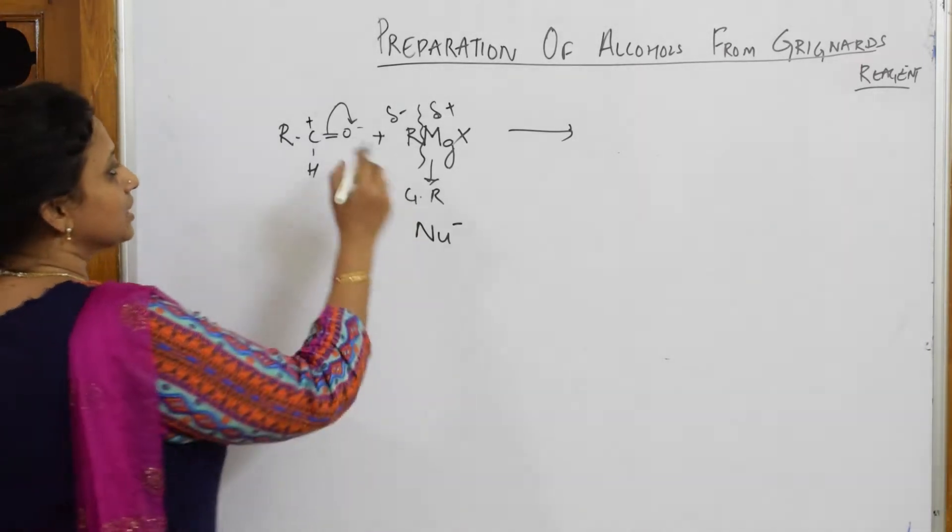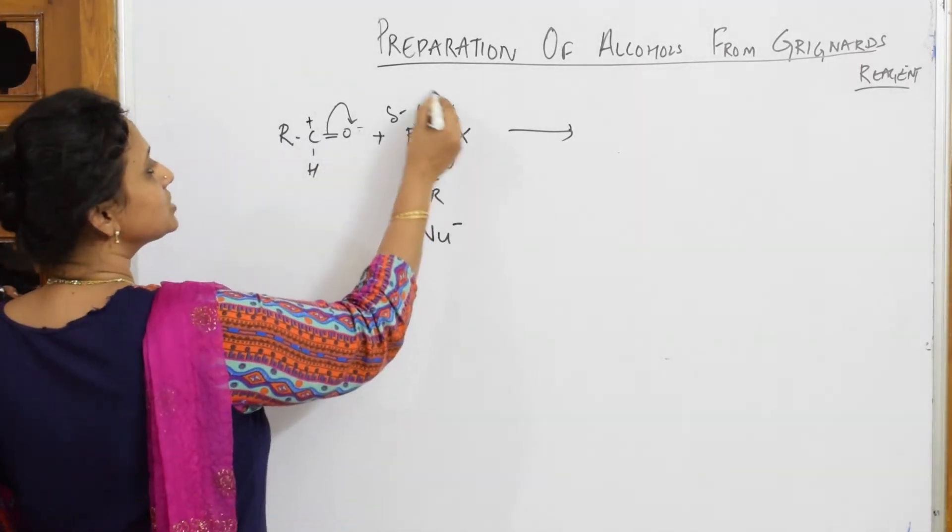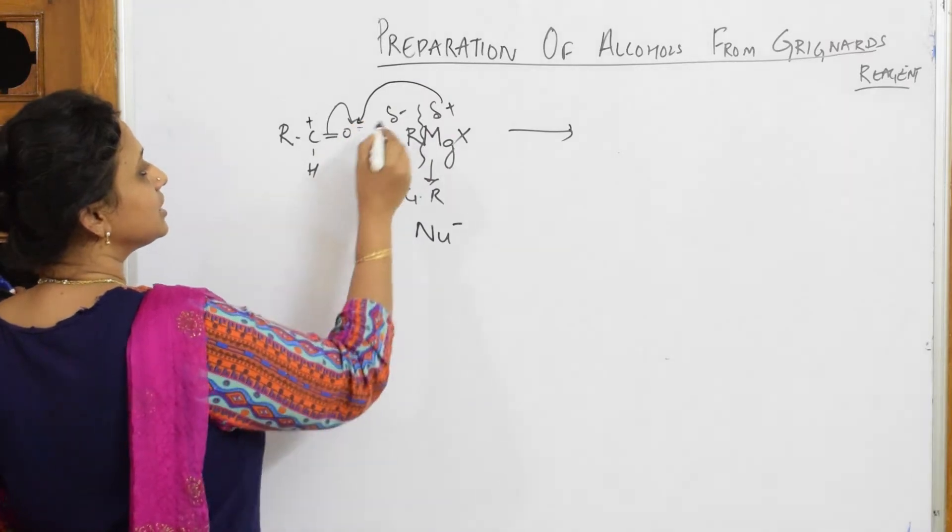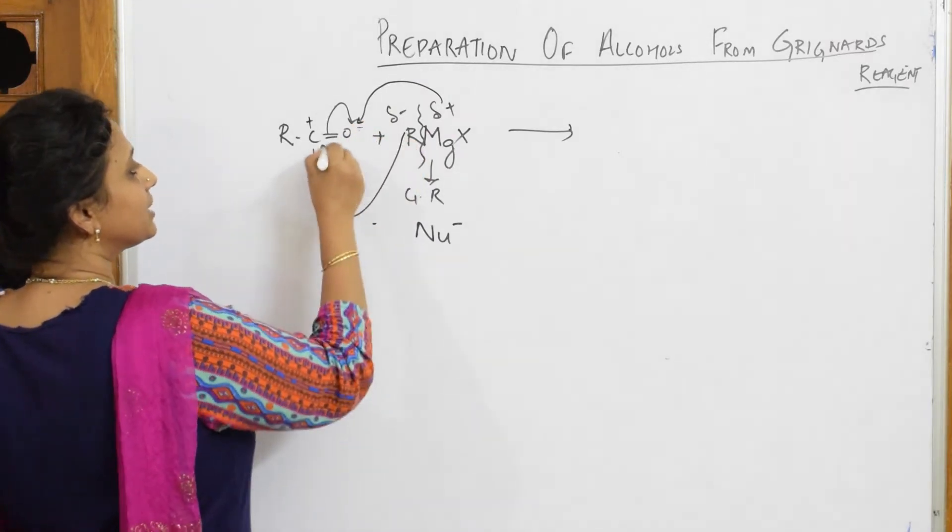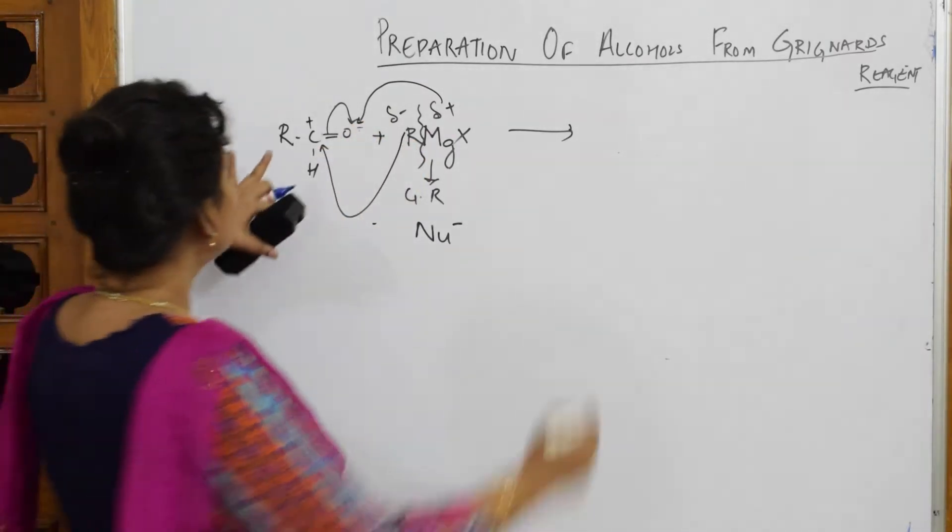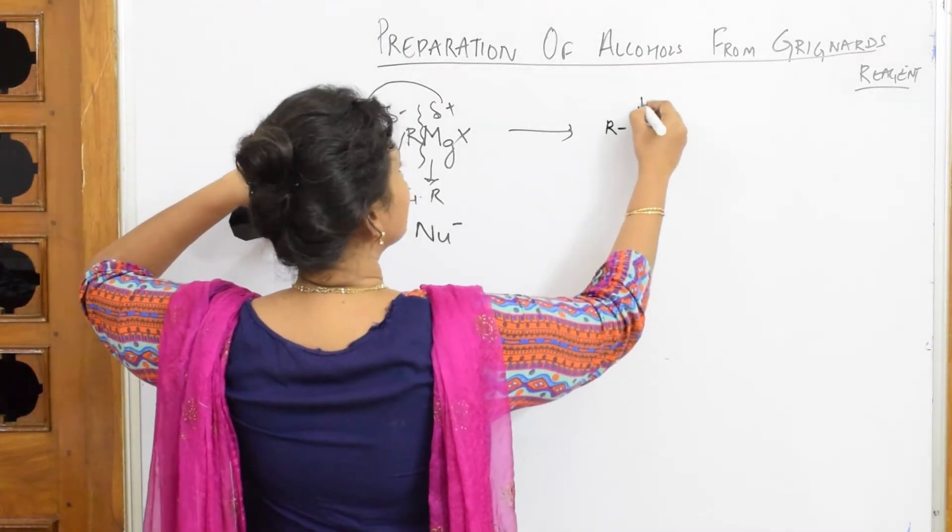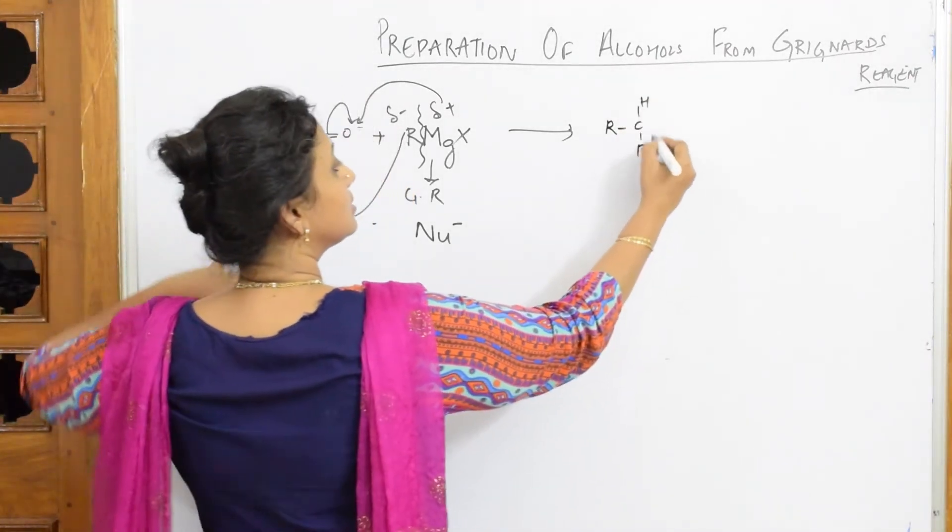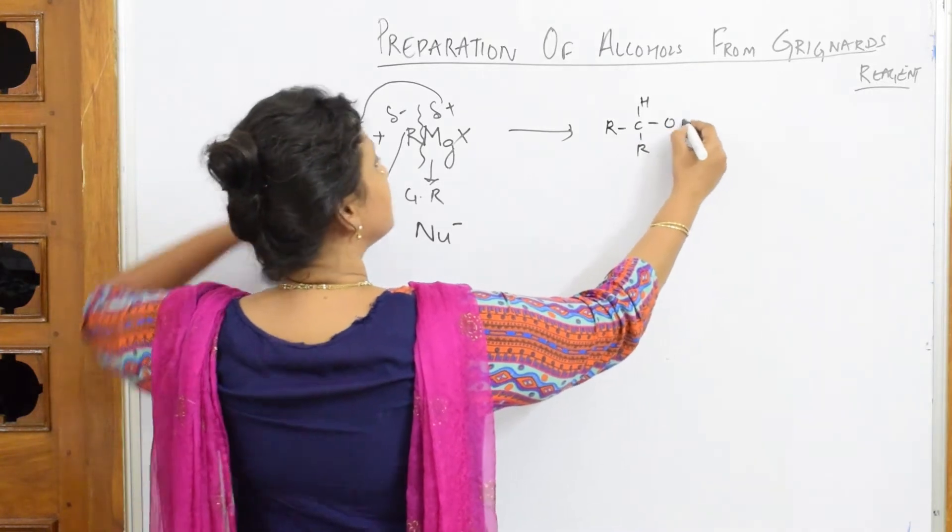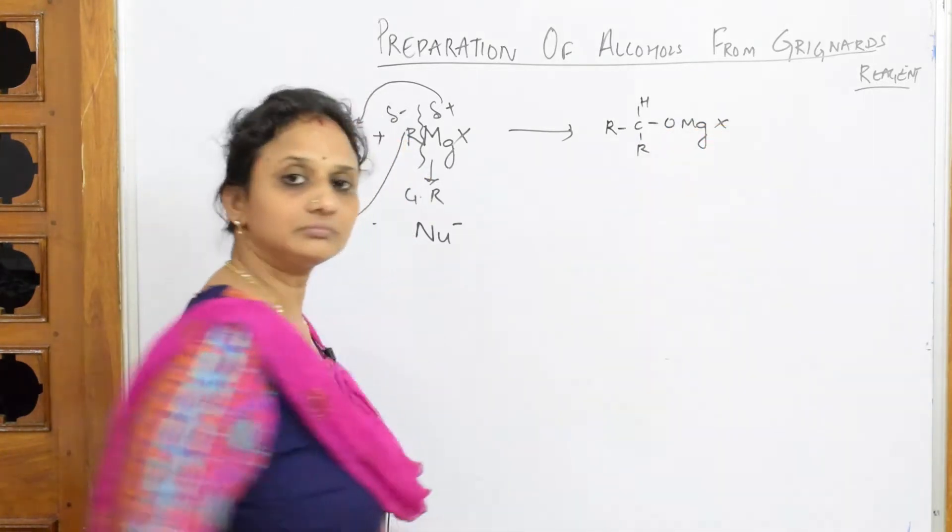Now because of this cleavage, oxygen will get a minus charge and this becomes plus. Now observe carefully, this is minus. So the positive will go and attack oxygen. The negative alkyl group will come and attack this. So what do I get? I get RCHROXMgX.